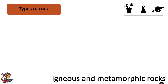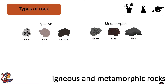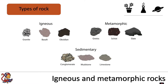There are three different types of rock: igneous rock, metamorphic rock, and sedimentary rock. Sedimentary rock is covered in detail in another video. In this video we're going to concentrate on igneous and metamorphic rocks.